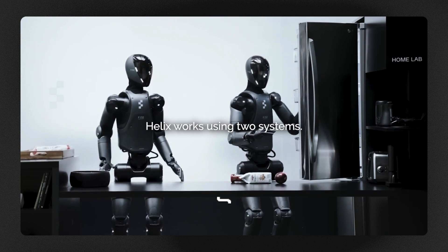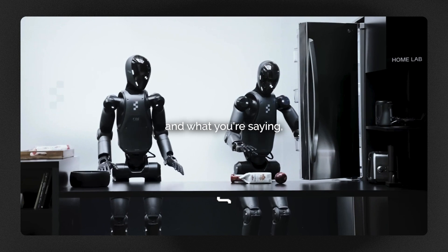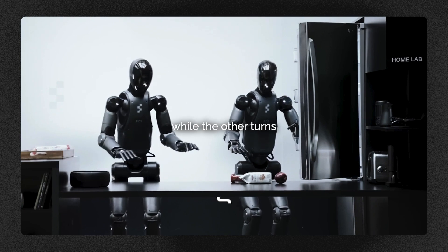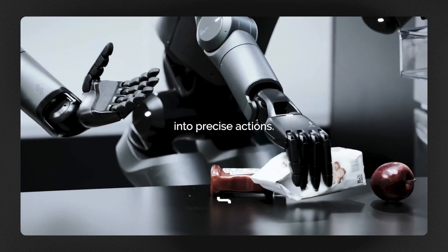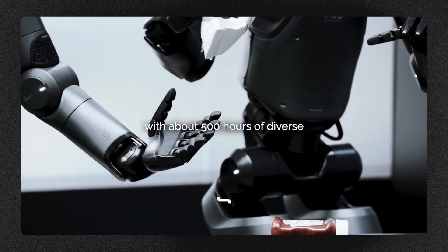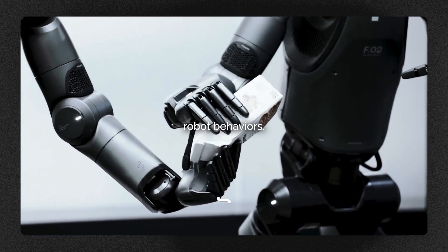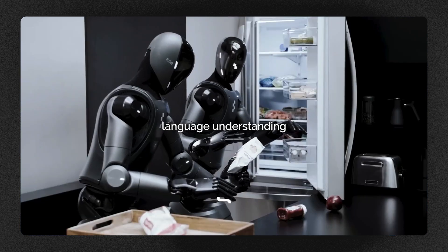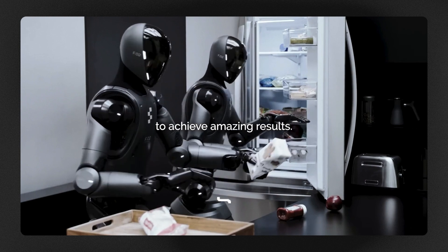Helix works using two systems. One understands what's happening and what you're saying, while the other turns that understanding into precise actions. We trained Helix with about 500 hours of diverse robot behaviors. It combines language understanding with precise movements to achieve amazing results.